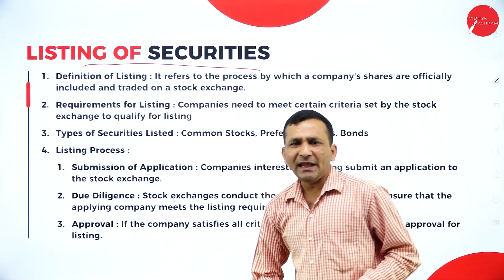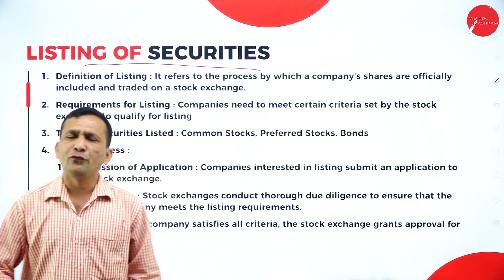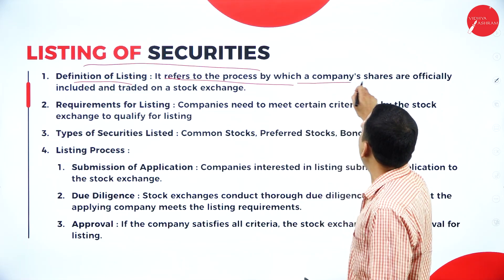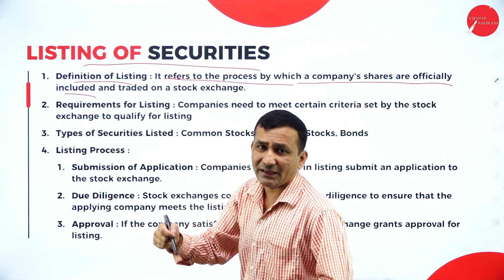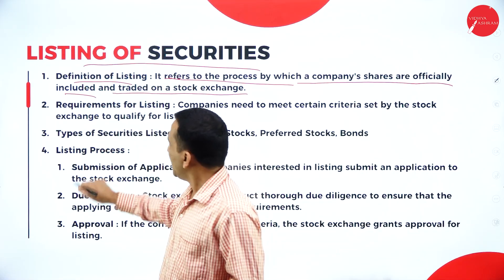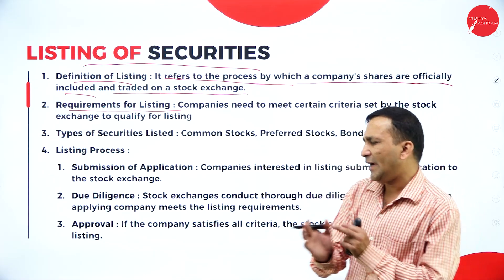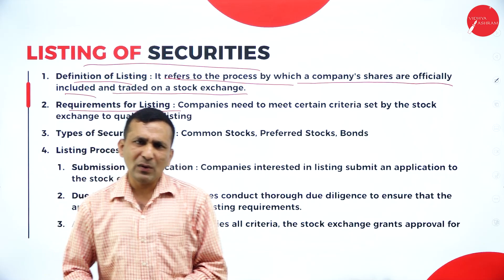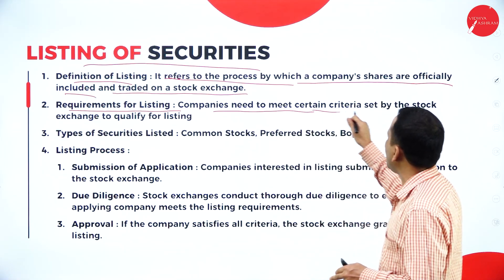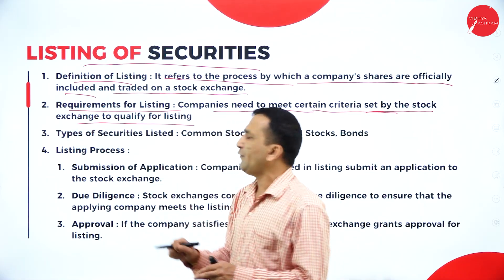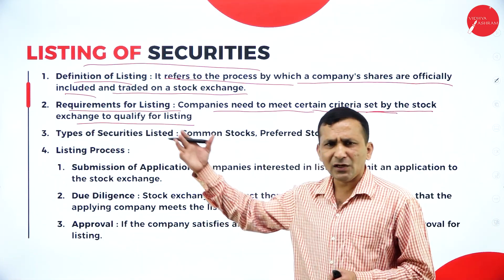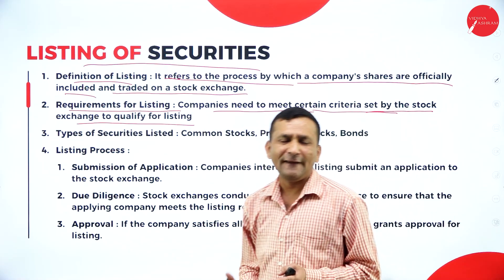Next, listing of security: any specific company raising capital definitely wants to go for listing. It refers to the process by which a company's shares are officially included in the traded market — traded on the stock exchange — and the company wants to list under a specific exchange. Next, the requirement for listing: any company cannot go for listing blindly. There is a requirement related to economic factors and financial feasibility of the company. The company needs to meet certain criteria set by the exchange to qualify for listing, like providing a financial balance sheet and the proper license. There are many requirements an individual company must fulfill before they can go for listing.